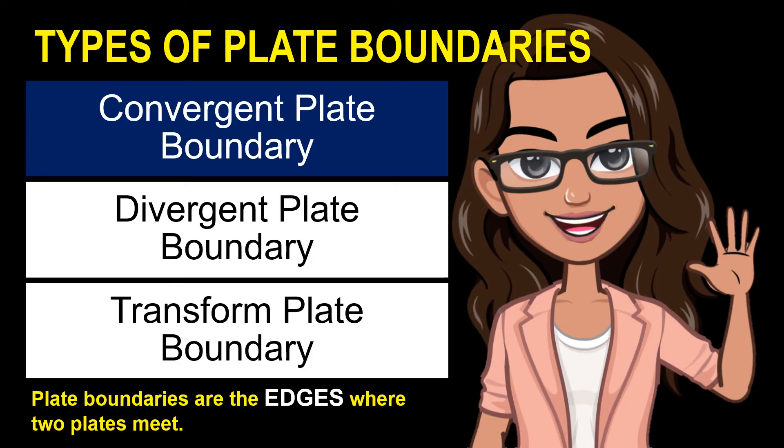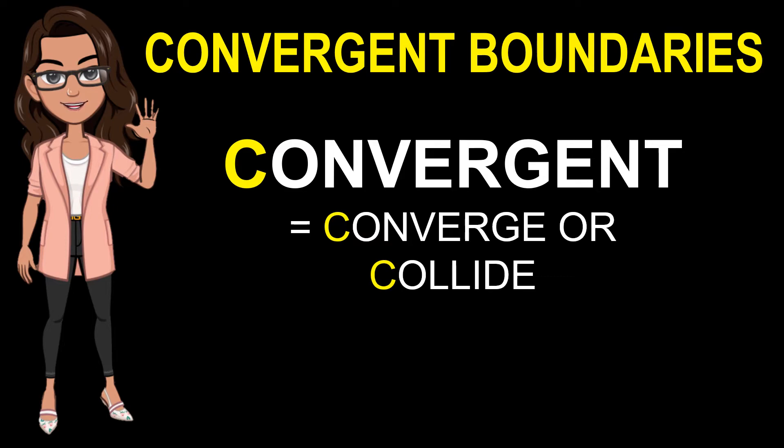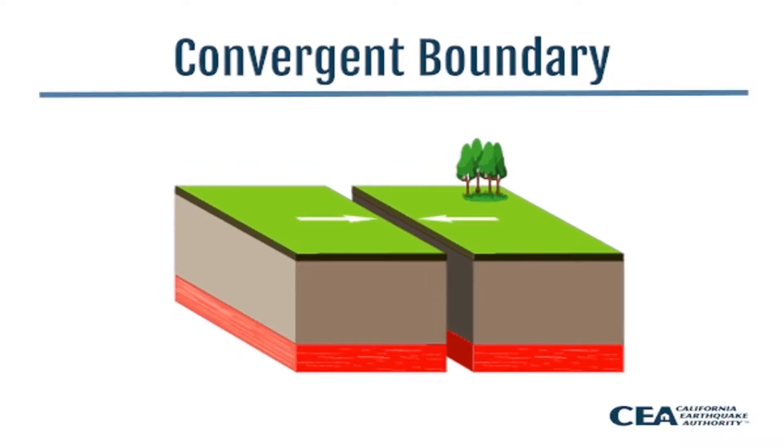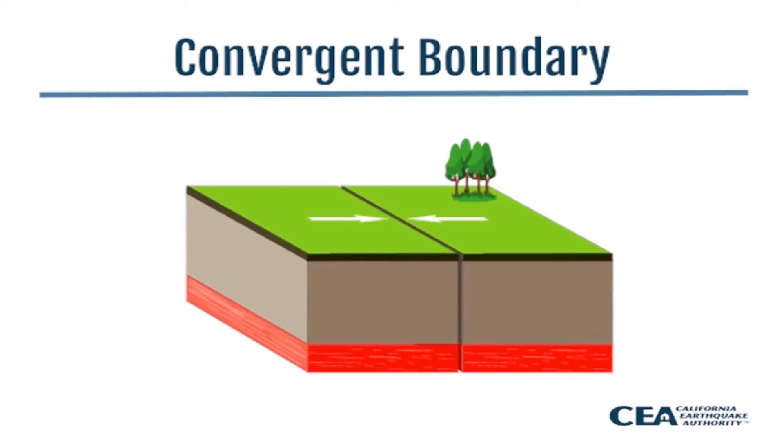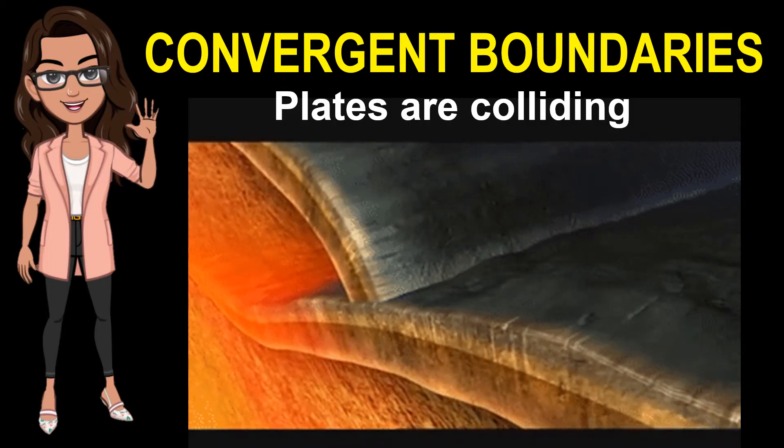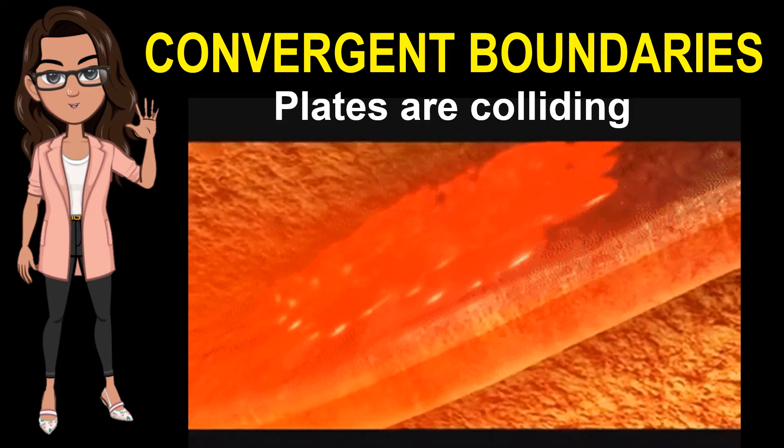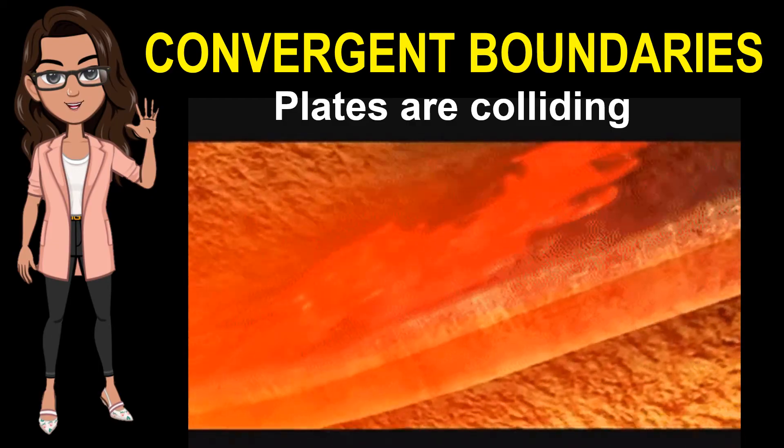Let's start with convergent plate boundary. The word convergent is the adjective form of converge and synonymous with collide. In simple words, converge means to come together or to meet at one point. In convergent boundary, the plates are colliding as shown in the figure. Subduction zones occur when one or both of the tectonic plates are composed of oceanic crust. The denser plate is subducted underneath the less dense plate. The plate being forced under is eventually melted and destroyed.